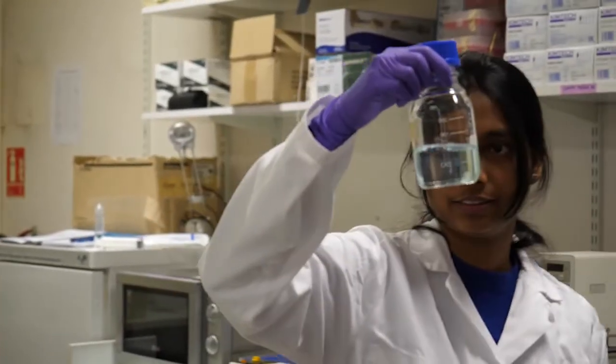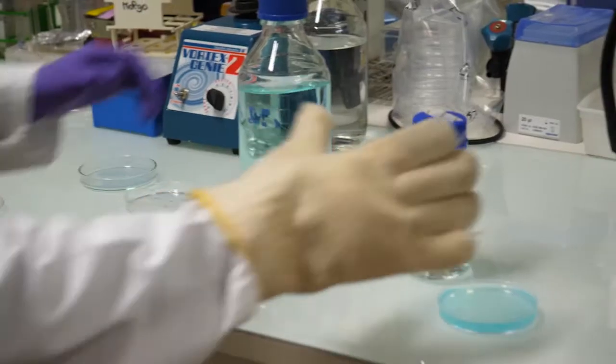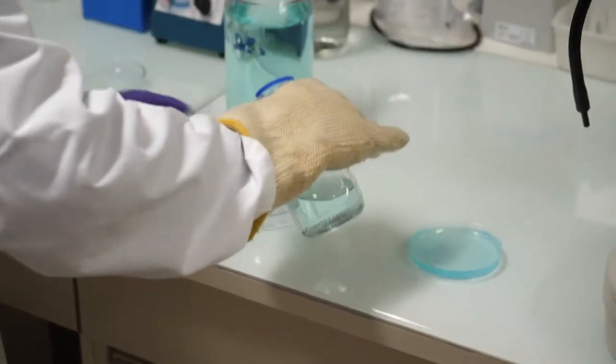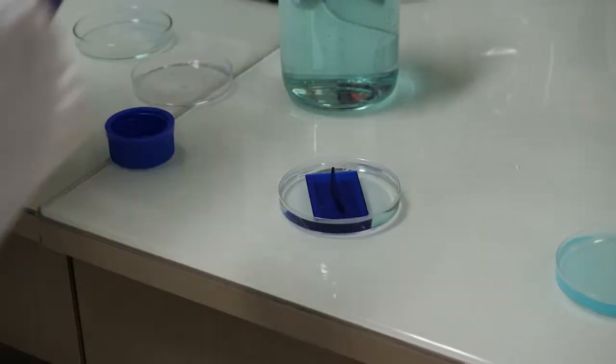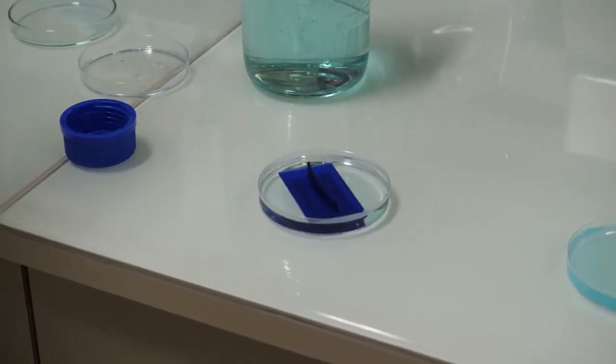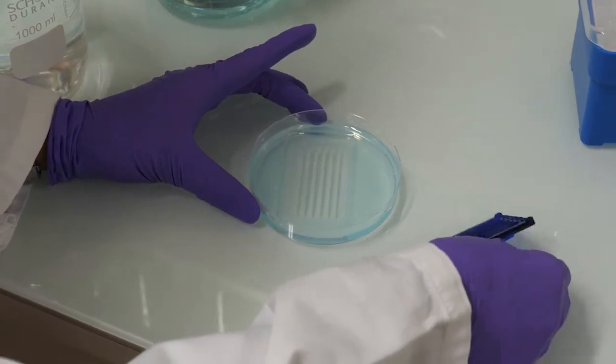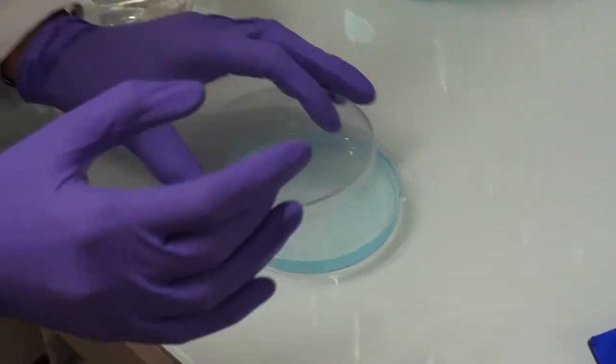Warmed 1.5% agarose in embryo medium containing methylene blue is poured in a 10 cm petri dish, and a plexiglass mold is applied on top of the agarose to allow the formation of grooves where the embryos will be lined up. When agarose has solidified at room temperature, remove the comb and add embryo medium. Injection plates can be stored at 4 degrees Celsius for 2 to 3 weeks.